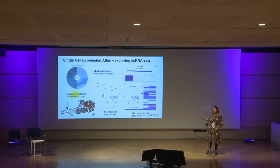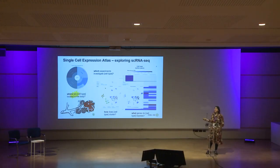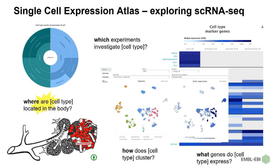Once you've found a cell type or gene of interest, you can look at how that clusters in the corresponding cells using dimensionality reduction plots, overlay that with metadata, and look at the corresponding gene expression heat map. You can also look at what genes your cell type of interest expresses, and whether your gene of interest co-expresses in a particular cell type. And lastly, with some datasets, we develop anatomograms which allow users to answer where their cell type is located in the body.